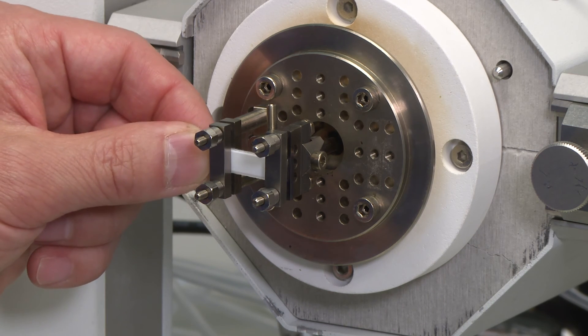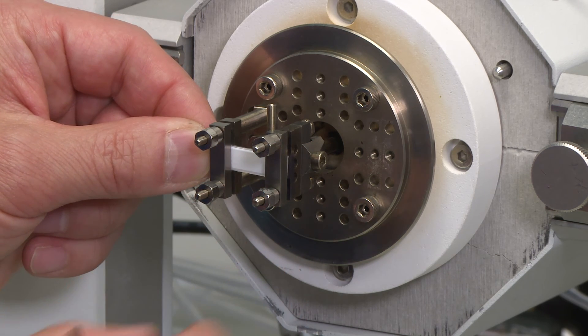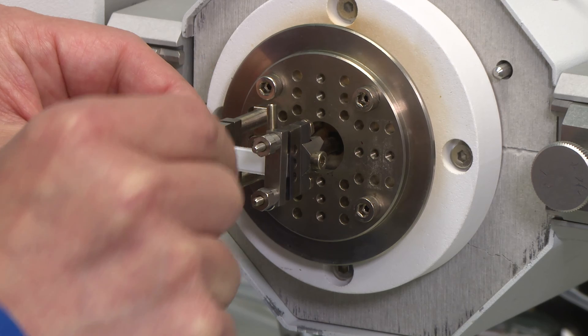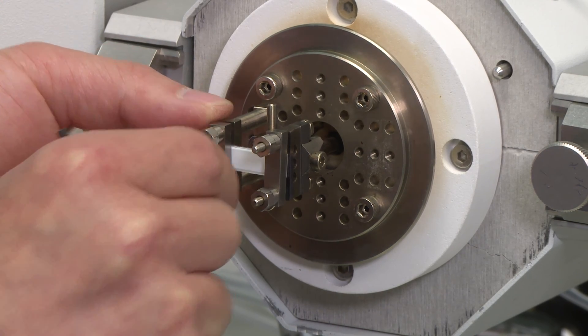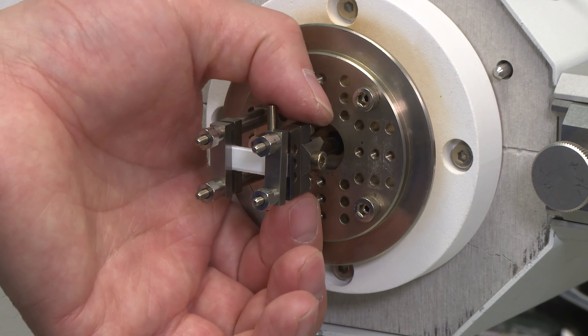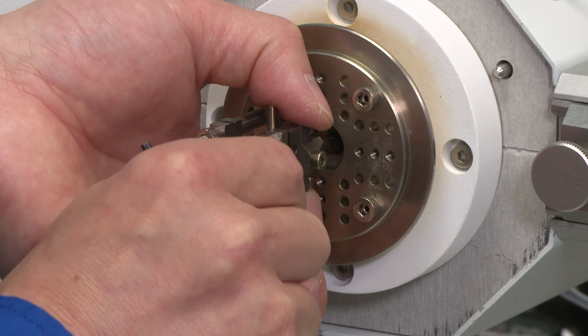After you have set up the single cantilever bending fixtures, you can slide in your sample and tighten. Usually you want to tighten the nuts on the fixed pillar and hold the drive shaft while tightening the other nuts.